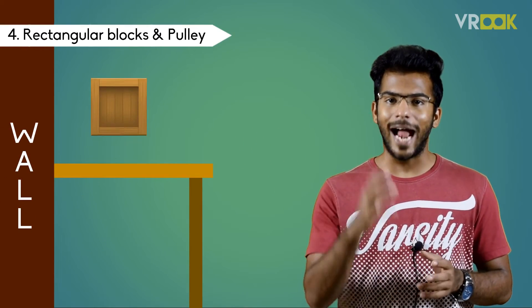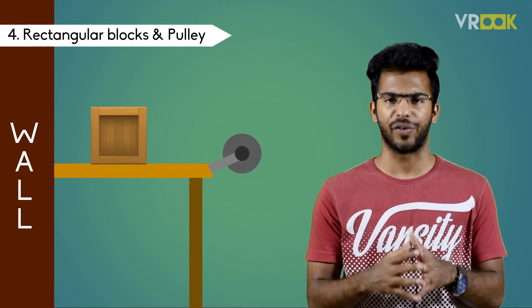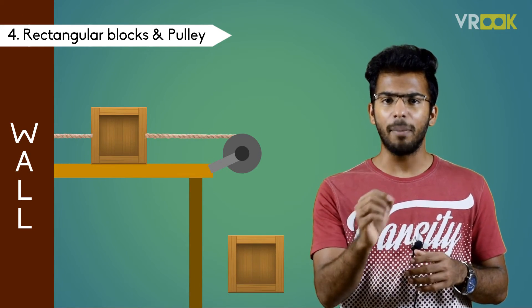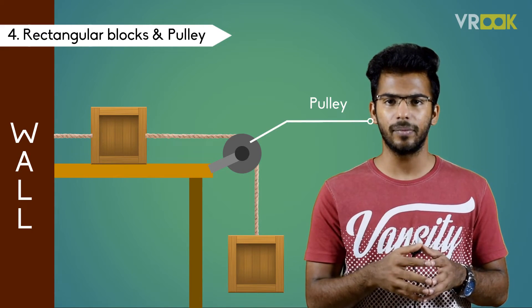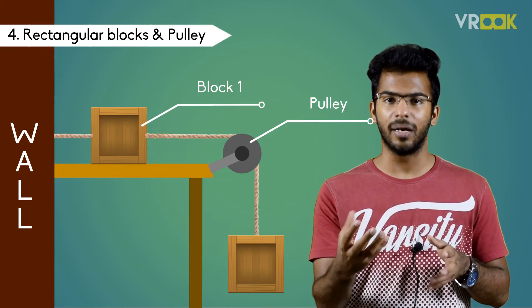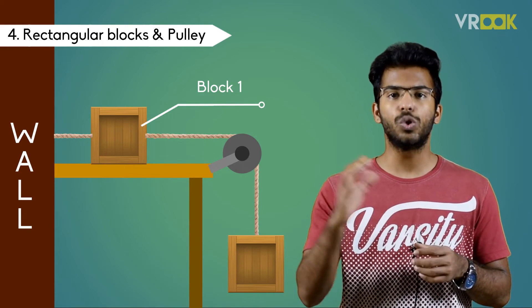Now let us look at a complex problem. We have a rectangular block and pulley on a smooth surface. It is attached to another block by string passing over a pulley. The block 1 is restrained from moving by a string attached to the wall.